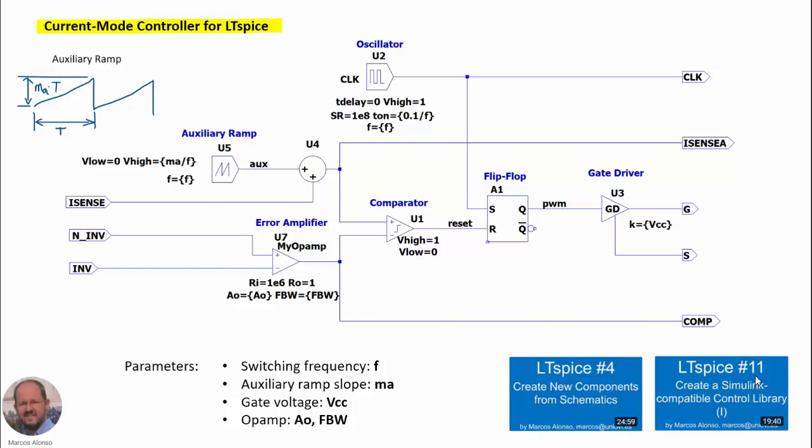Note that we have three inputs: iSense, corresponding to the current through the inductor — or we can also measure the current through the transistor — the non-inverting input of the operational amplifier, and the inverting input of the operational amplifier.